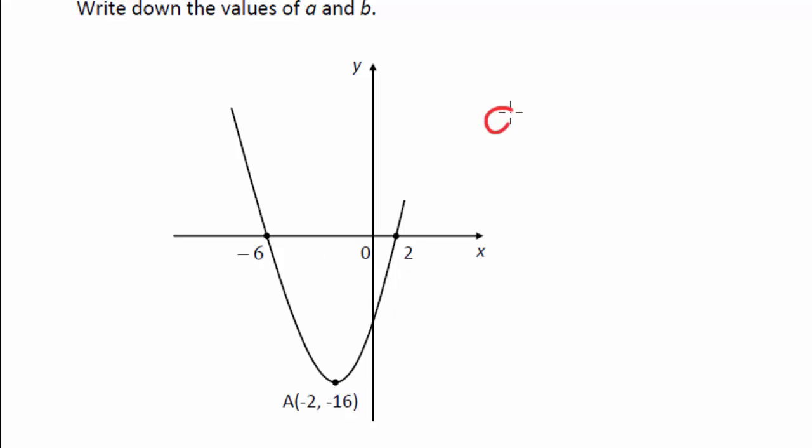So a equals, again, minus a and b is your turning point. So you just change the sign. So a equals 2, b is just read from that. So again, it is y equals x plus 2 squared minus 16.